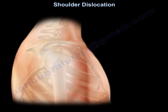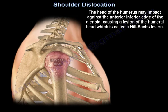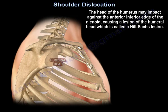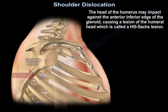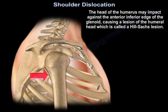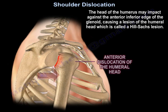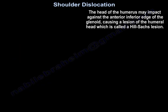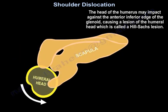The head of the humerus may impact against the anterior inferior edge of the glenoid, causing a lesion of the humeral head. This is called a Hill-Sachs lesion.